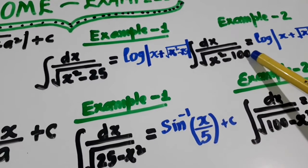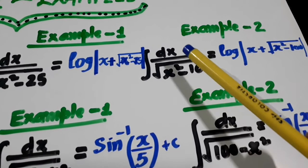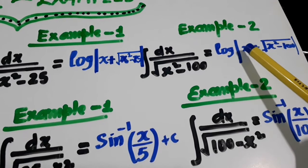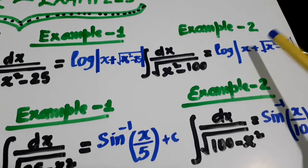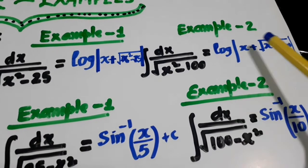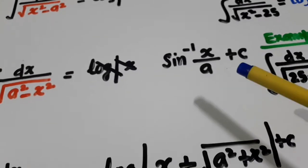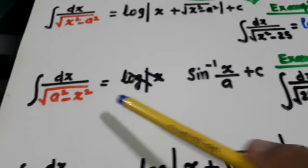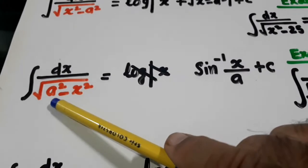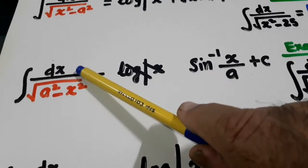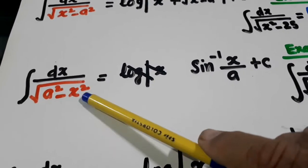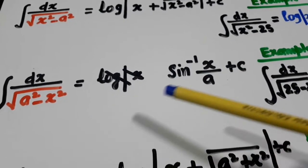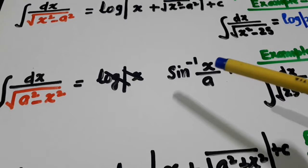Second example: dx over under root x square minus 100. The answer is log of x plus square root of x square minus 100 — same as before. Now for the second formula type, when it is a square minus x square, the answer is sine inverse x over a plus C. If you put a equal to one, then dx over under root one minus x square is sine inverse x. Since a is also present here, it becomes sine inverse x over a.